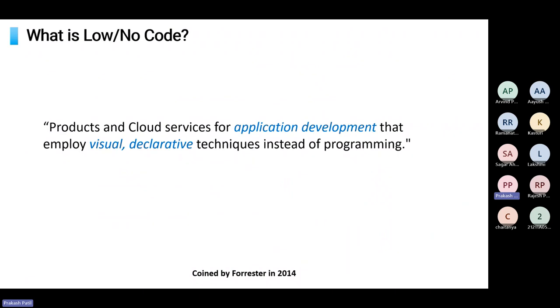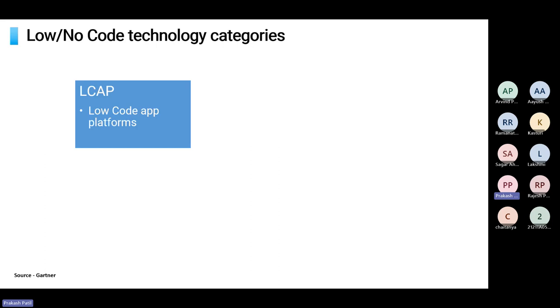What is low or no-code in today's context? The low-code term was coined by Forrester, a research firm, in 2014, emphasizing visual and declarative techniques as opposed to programming. To understand the landscape of no-code or low-code applications, it helps to understand them in different categories. Gartner, another research firm, has created a list of categories. The first is LCAP — low-code application platforms — which focus on custom app development by abstracting or minimizing coding requirements.